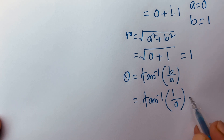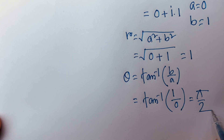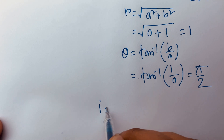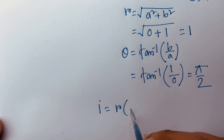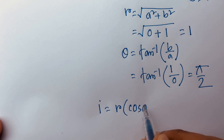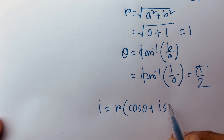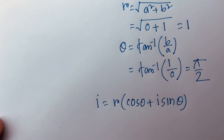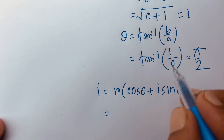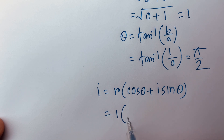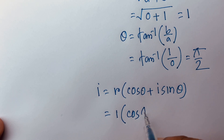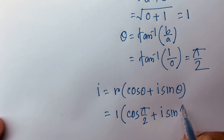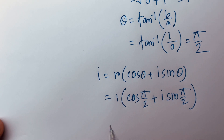In this case I can say theta is equal to tan inverse of b over a. Remember that b is equal to one and a is equal to zero, so theta will be pi over two. Then I can say i it will be r times (cos theta + i sin theta). We find out the value of theta is pi over two and r is one, so it is one times (cos(π/2) + i·sin(π/2)).